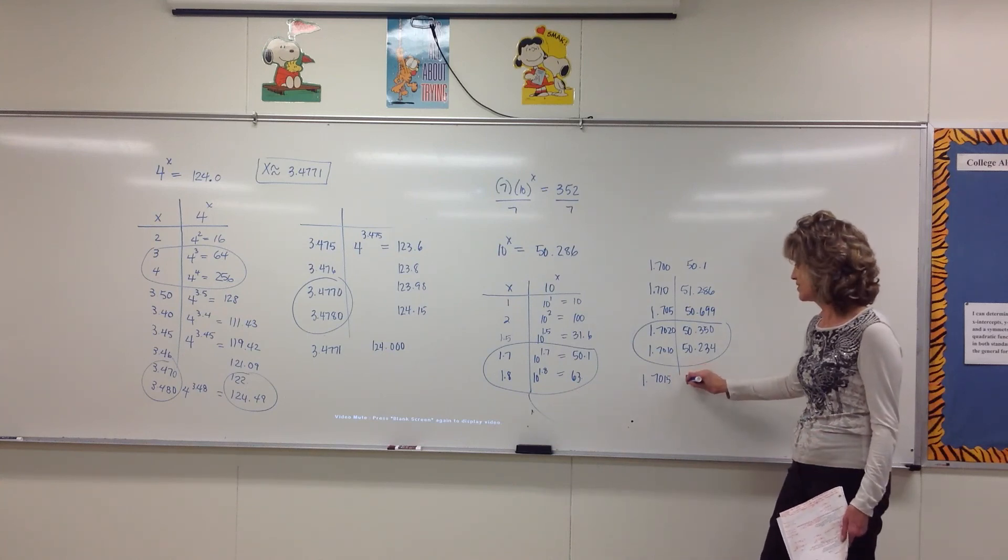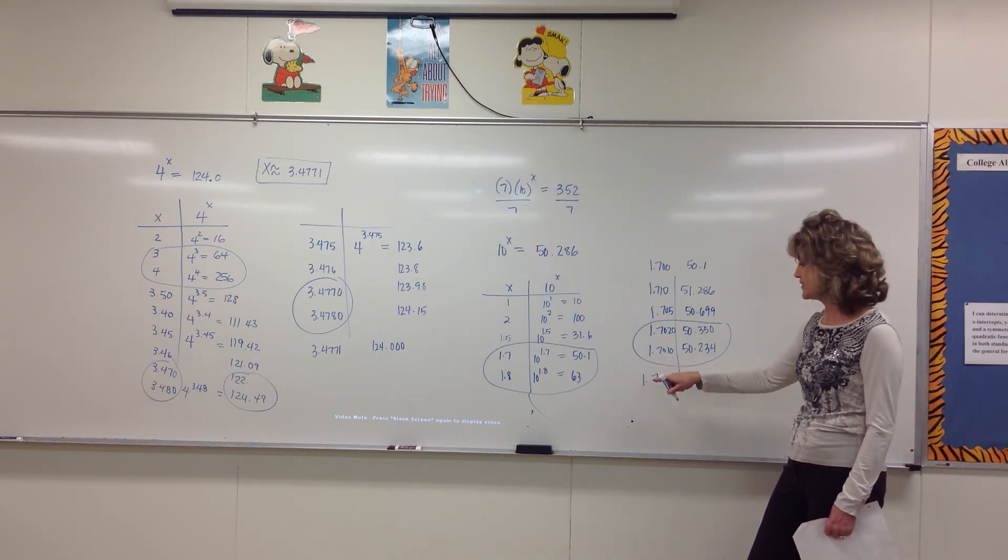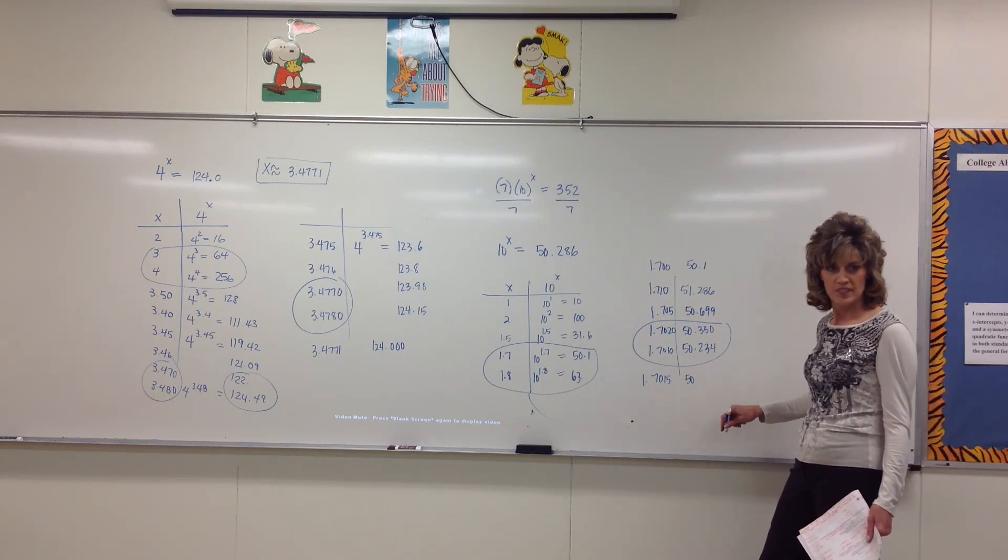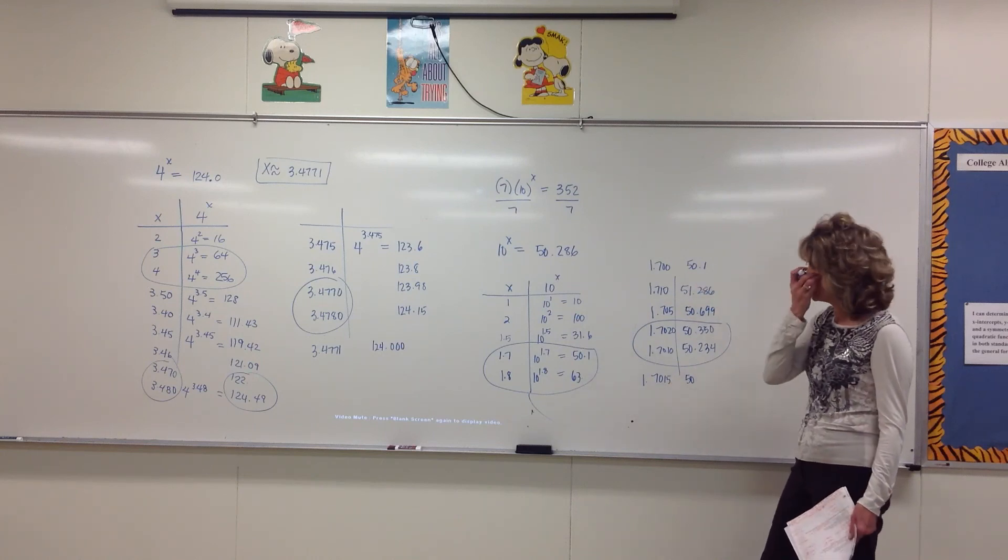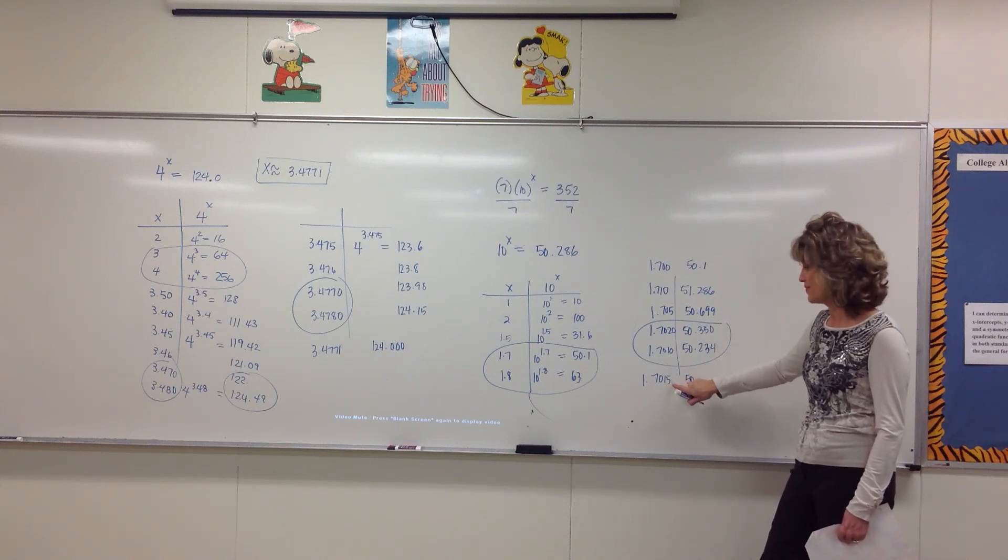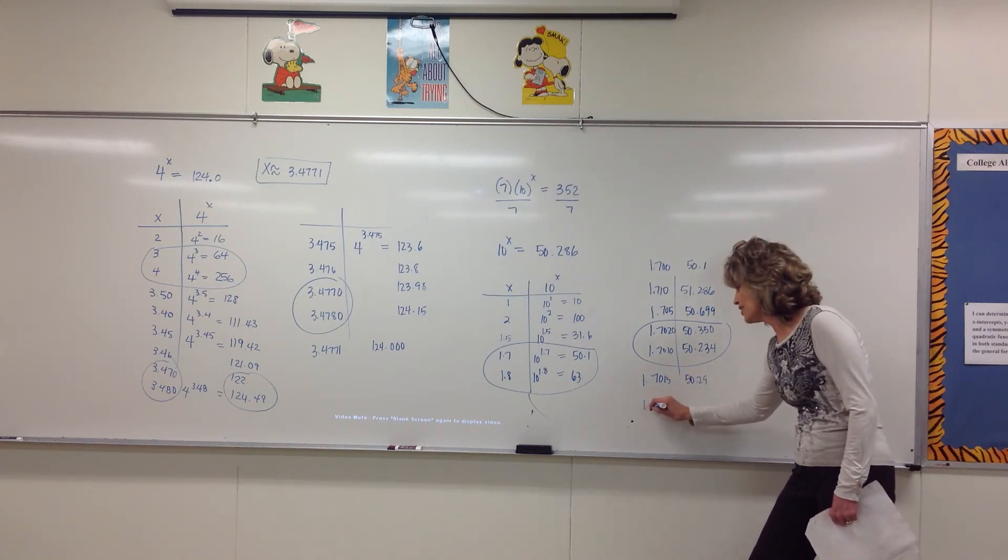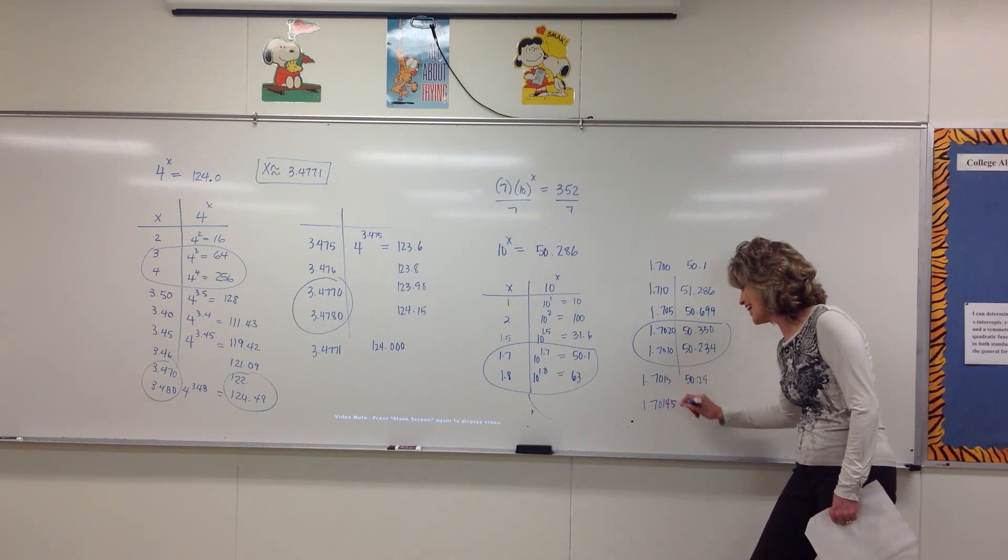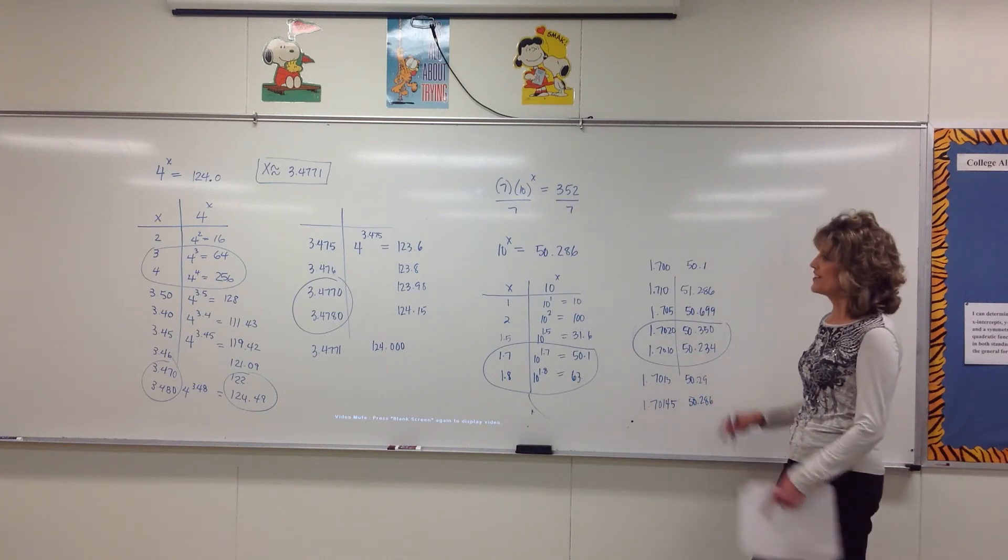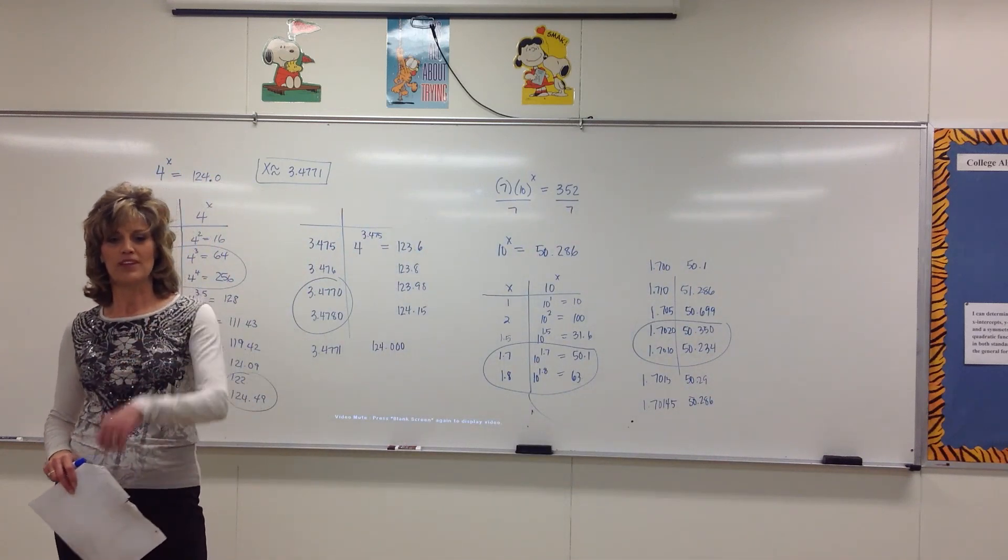Do we want the decimal after to be a zero or just to round it down? If you type in 10 raised to the 1.7015, you got what? It can just be, just as long as you have 0.286. I'll take it. Anybody have it since we're about to run out of time? 1.70145. So 1.70145, will that give us? Yes. 50.286. It's a little bit of a tedious process, right? So by the time we do trial and error, you will definitely appreciate the logarithm.